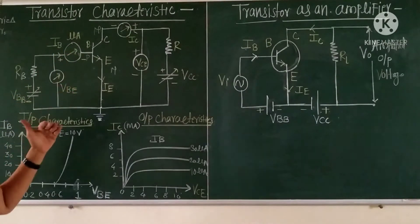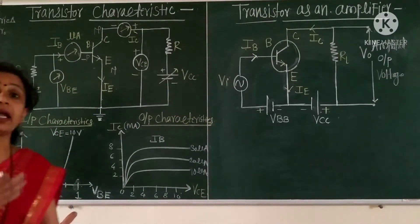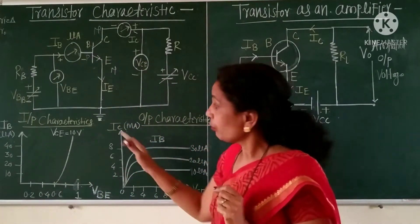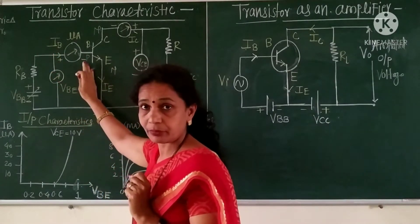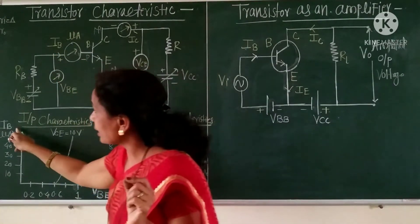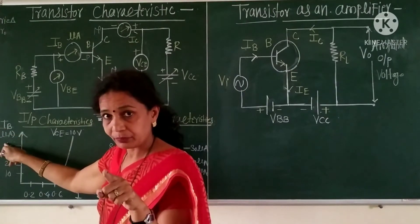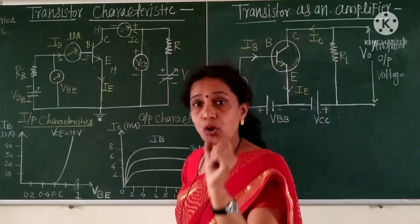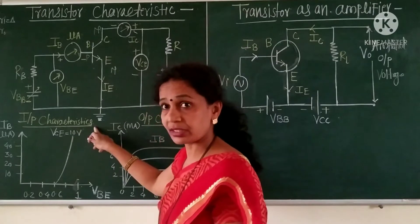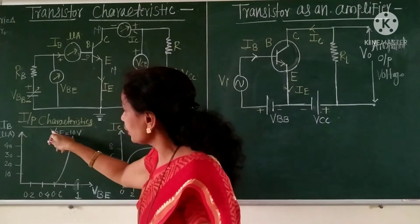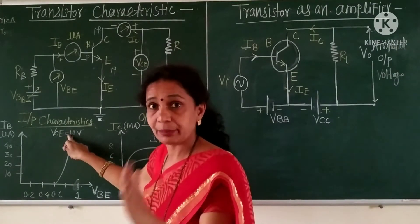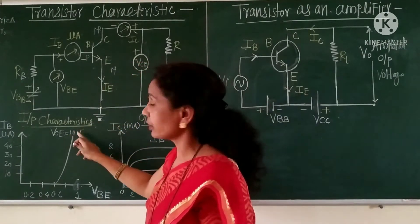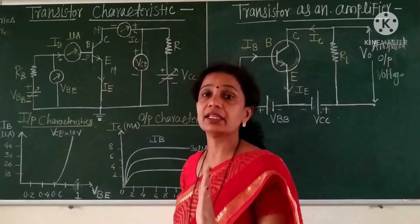If we study the input and output characteristics, the nature of the graph is like this. First, input characteristics means this section only — the variation of base current, which is in microampere, to the base emitter voltage is called input characteristics when collector emitter voltage VCE is kept constant. If VCE is 10 volt, the nature of the graph is like this.